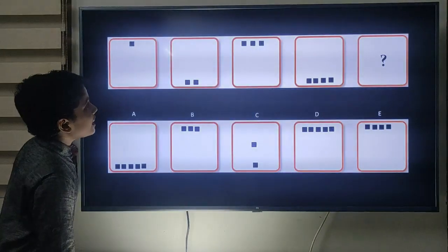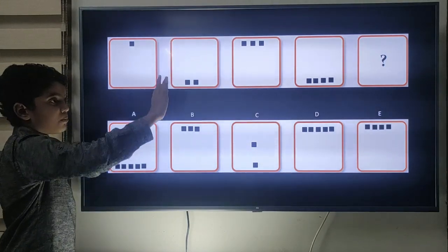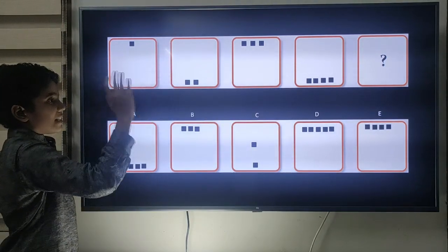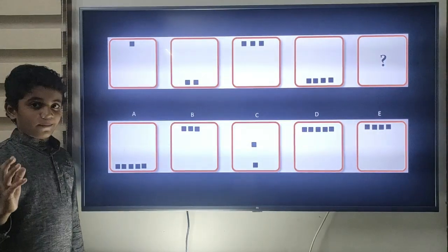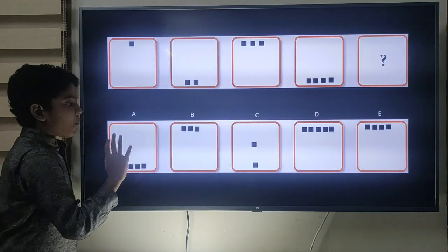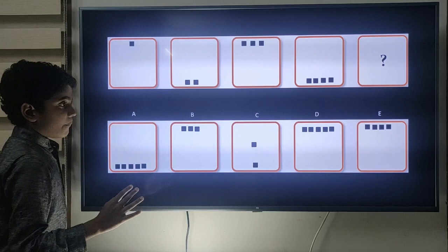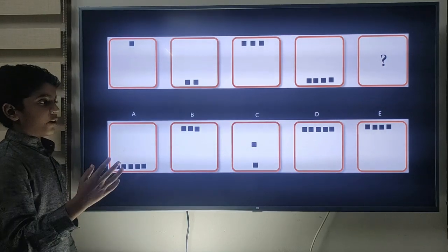Next question. In the figure you can see that the black squares are increasing in each box. So in the missing box the black square is 5. We have two options A and D that both have 5 numbers. Now we want to choose either A or D.